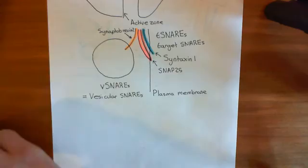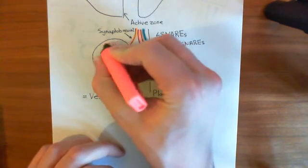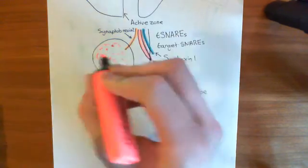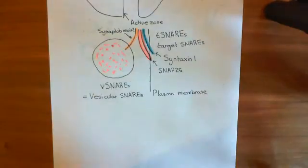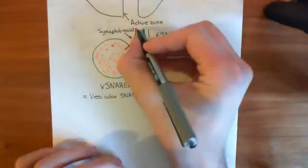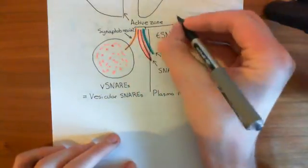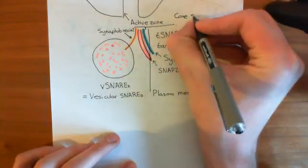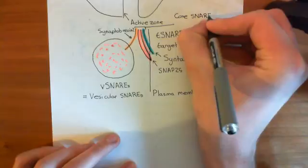As the synaptic vesicle moves towards the plasma membrane, synaptobrevin-2 in orange will get incorporated into this complex — it will wrap its alpha helix into the complex. This complex of all four alpha helices is known as a core SNARE complex, and in particular it's what's known as a transcore SNARE complex.